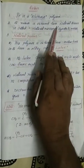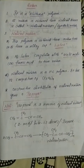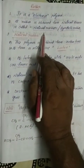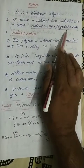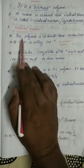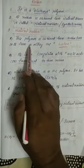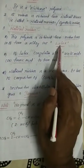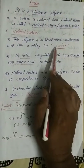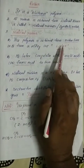Rubber is obtained from natural sources as well as prepared as synthetic rubber. Generally, rubber is obtained from natural sources — rubber trees. It can also be prepared in the laboratory as synthetic rubber. This polymer is obtained from the rubber tree in the form of a milky sap called latex. From the stem of the rubber tree, a white milky sap comes out, and that is called latex.